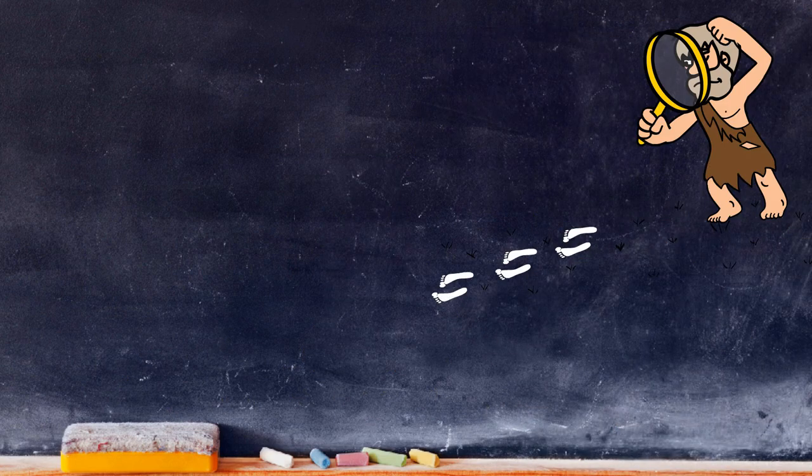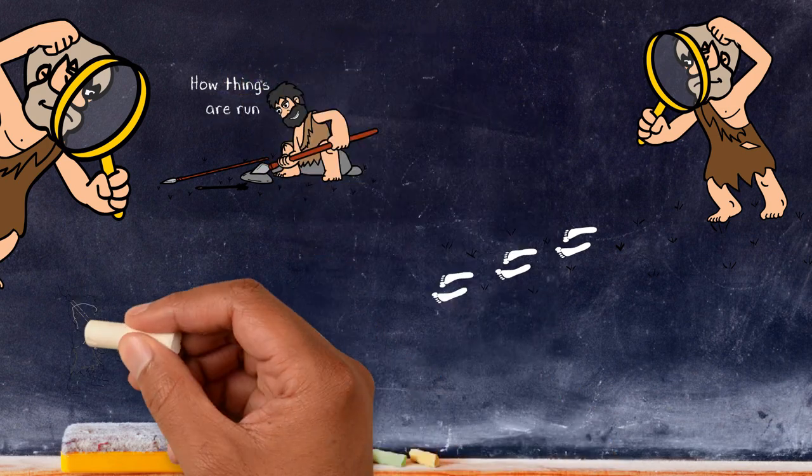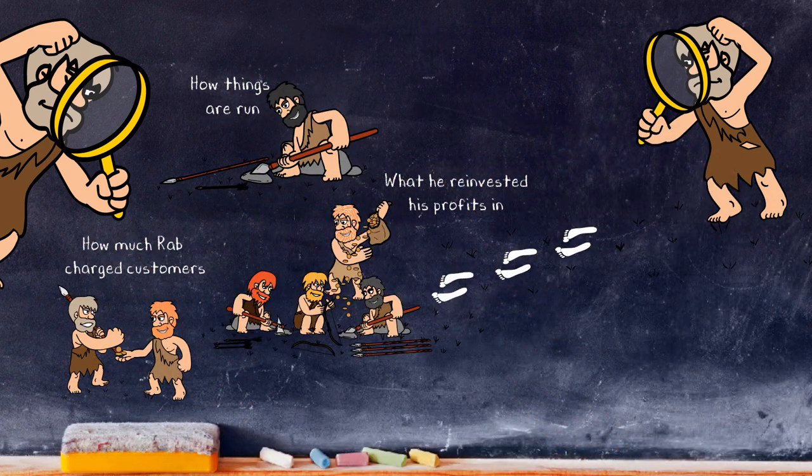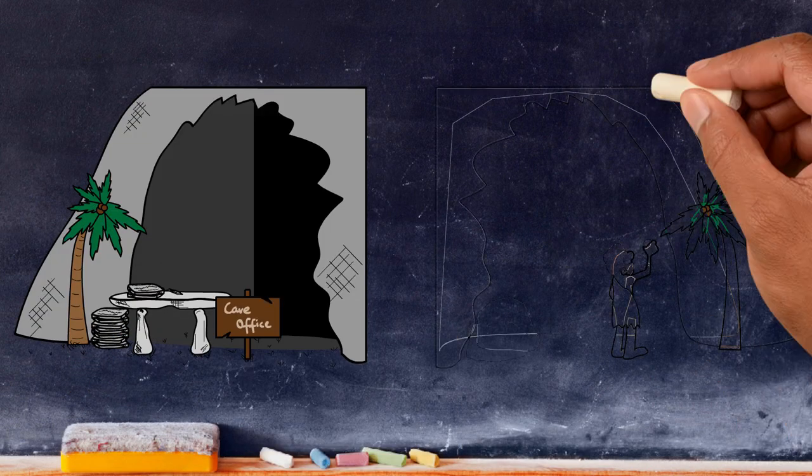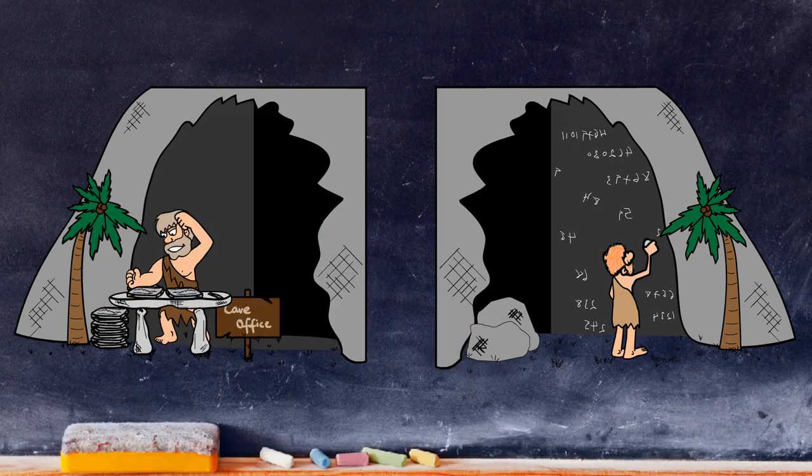Potential buyer Pete investigated Rab's business. He looked at how it was run, found out how much Rab charged customers, what he reinvested his profits in. If Rab had kept written accounts instead of scrolls in the cave wall, Pete would have looked at these too.